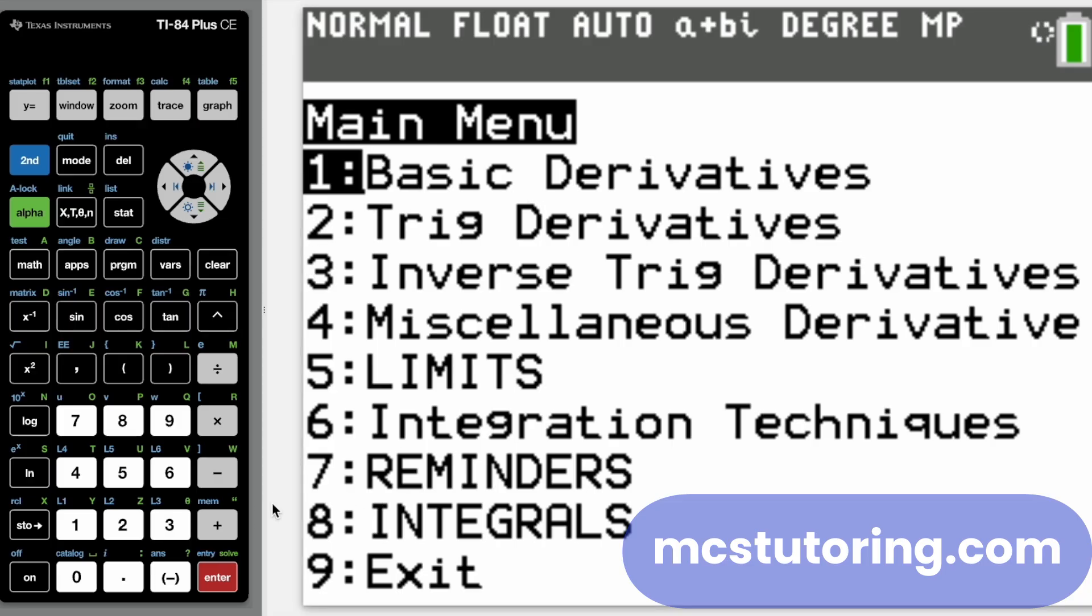So once you buy this, as we change it, you're going to get free updates. So don't worry about that. Let's go to the basic menu. So we've got everything you need basically for Calc 1 and most of what you need for Calc 2 class that would be covering AP Calc AB and a bit of AP Calc BC.